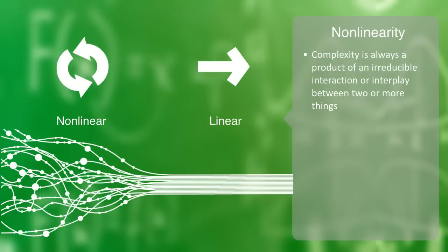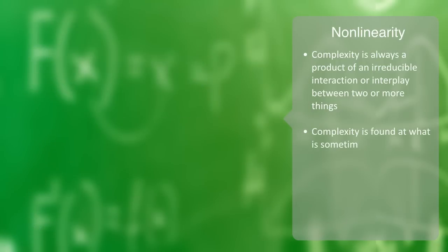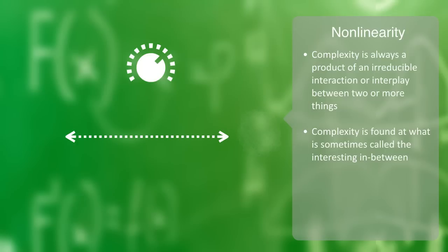Thus, one of the main ideas or findings of complexity theory is that complexity is found at what is sometimes called the interesting in-between. If we take some parameter to a system, say its rate of change or its degree of diversity, and turn this parameter fully up, what we often get is randomness or continuous change without any pattern. Or if we turn it fully down, we get complete stasis or homogeneity with very stable and simple patterns.